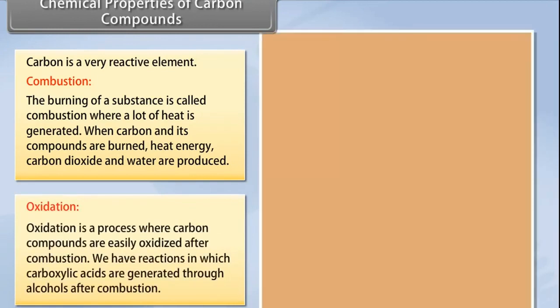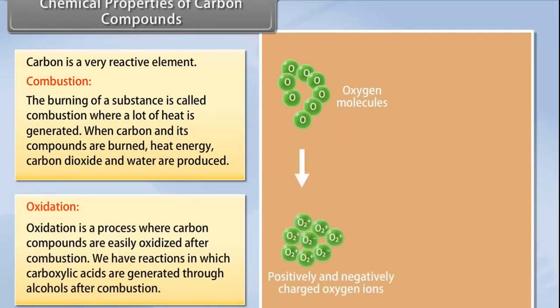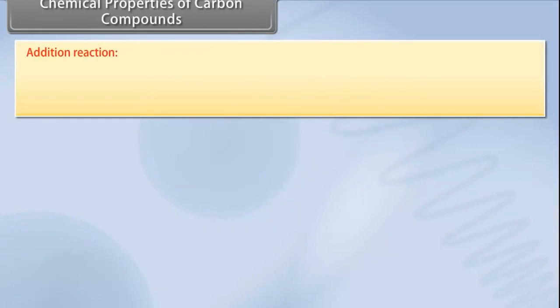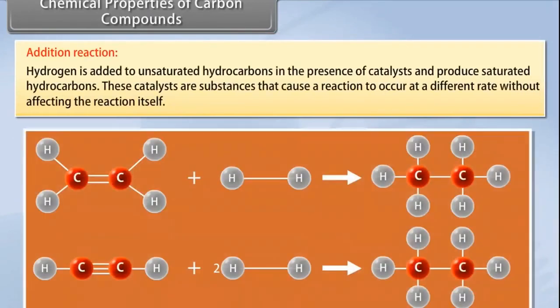Oxidation: Oxidation is a process where carbon compounds are easily oxidized after combustion. After complete oxidation, we have reactions in which carboxylic acids are generated through alcohol after combustion. Addition reaction: Hydrogen is added to unsaturated hydrocarbons in the presence of catalysts and produces saturated hydrocarbons. These catalysts are substances that cause a reaction to occur or proceed at a different rate without affecting the reaction itself.